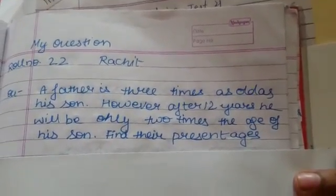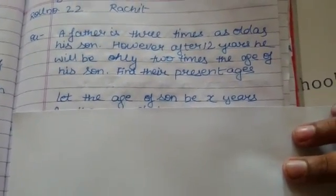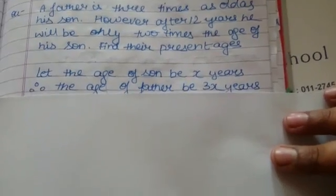How will you do this? We can assume, let the age of the son be X years. Therefore, the age of father will be 3X years.